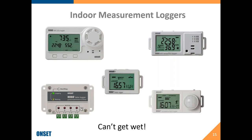Here's an overview of some of these indoor data loggers. They should not get wet, and they should not be in a condensing environment such as a greenhouse — these are indoor only. We're covering pulse, state, event, carbon dioxide, temperature relative humidity that can communicate USB and Bluetooth, small state loggers, Bluetooth Temp RH, and occupancy light. To give you an idea, these are a little bit bigger on screen than actual size. The small ones with the LCD screens are small enough to fit in the palm of your hand.